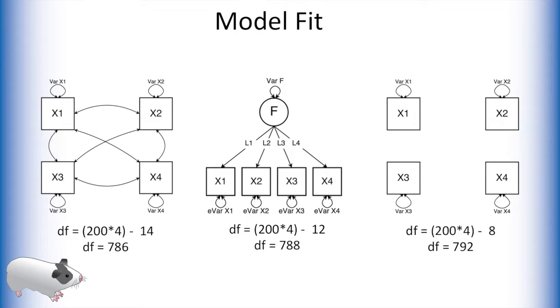Any factor model that we make to explain the covariation between these variables should then be somewhere in between. Indeed, the factor model we made in the previous video has degrees of freedom between the saturated and independence model.